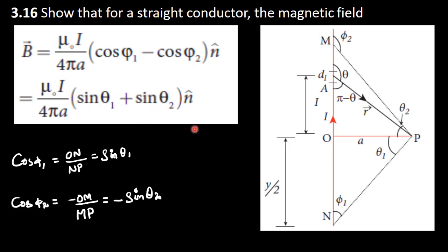For a straight conductor, the magnetic field B vector is equal to mu naught i divided by 4 pi a, into cos omega 1 minus cos omega 2, into n cap. This is equal to mu naught i divided by 4 pi a, into sin theta 1 plus sin theta 2, into n cap.